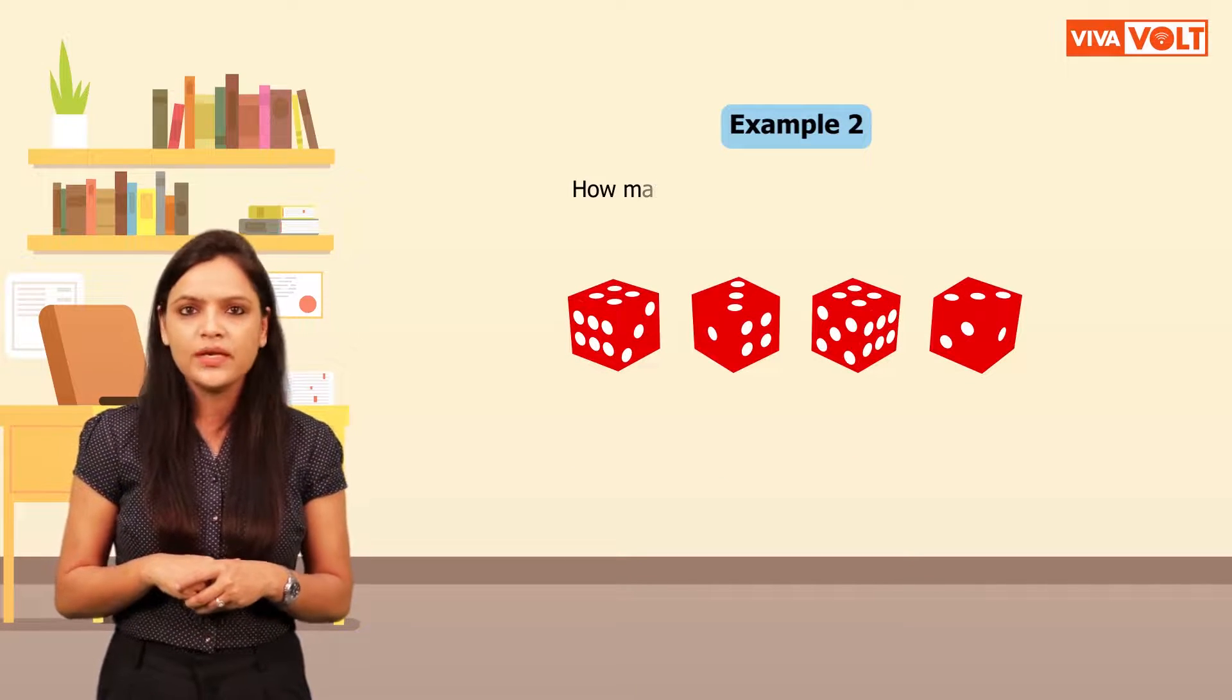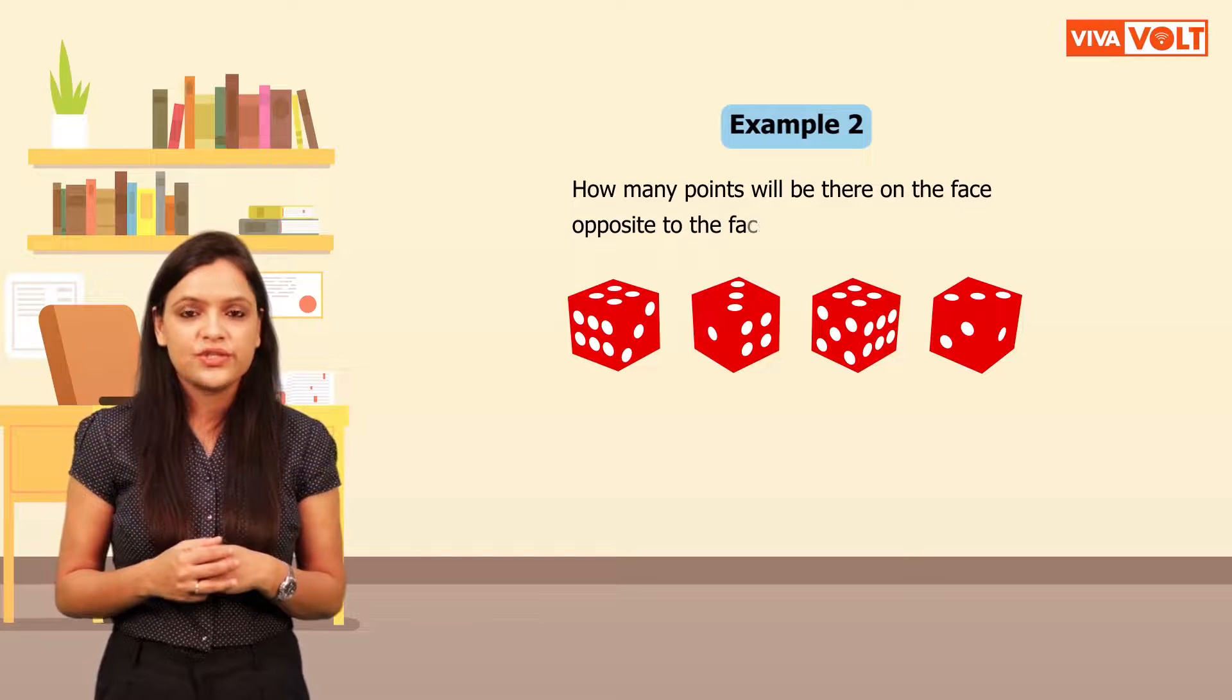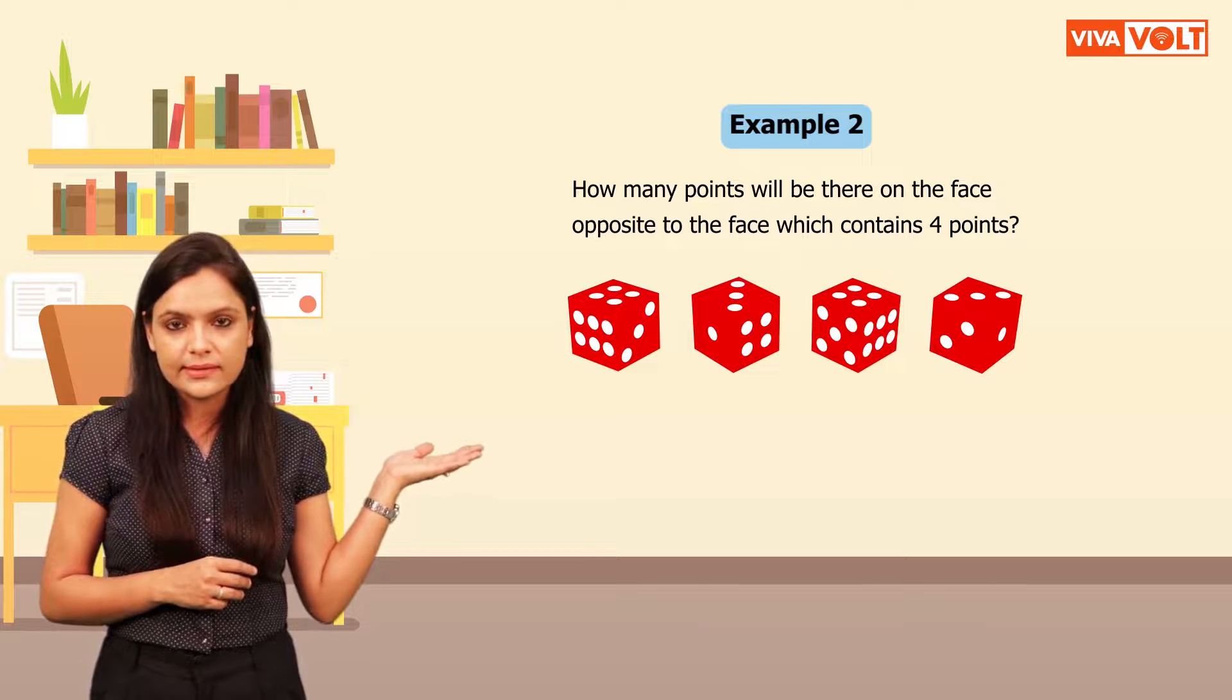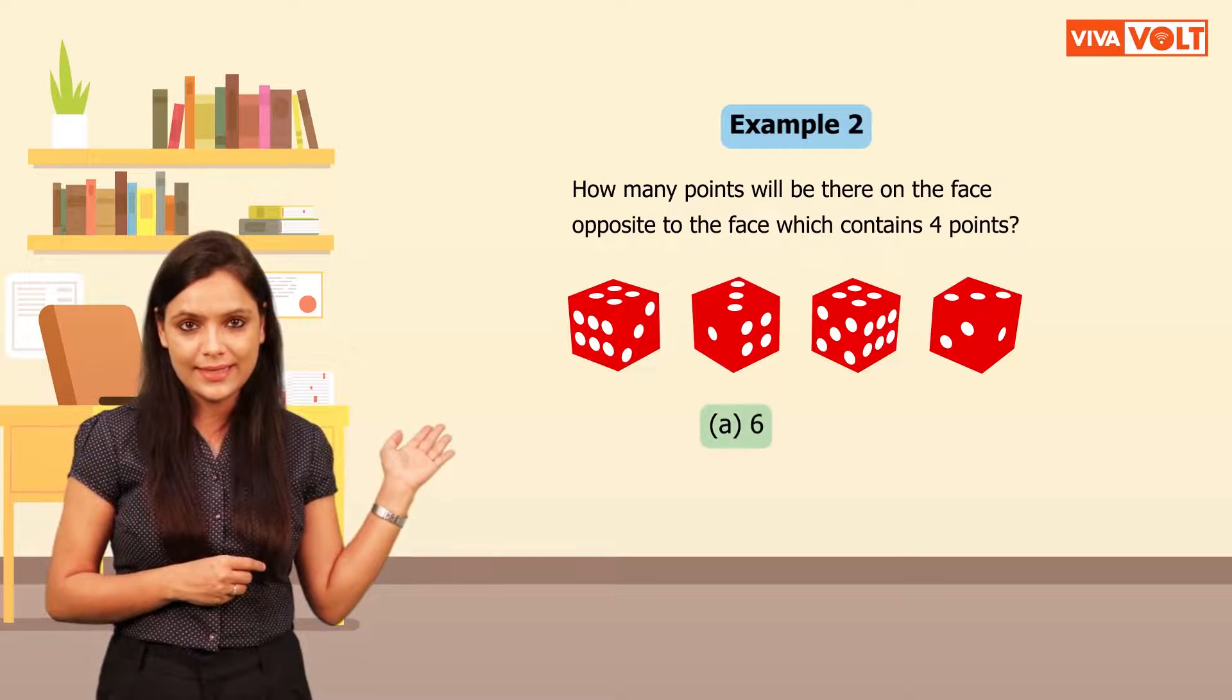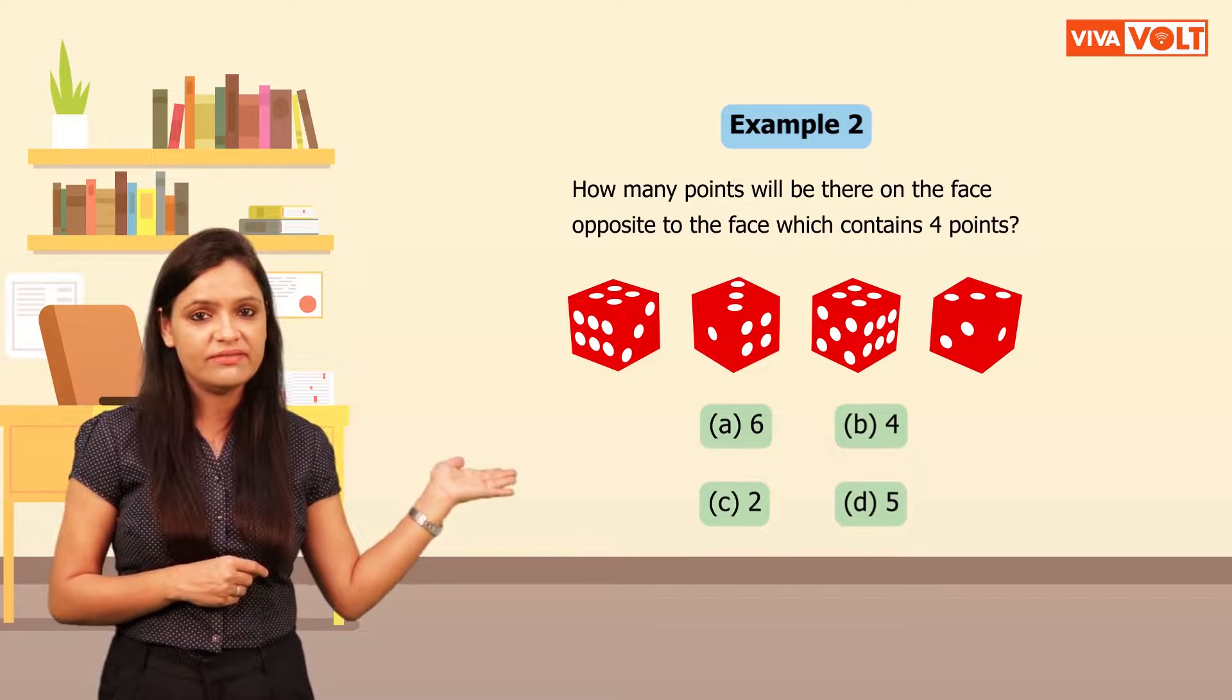Let's now look at an example based on dice. How many points will be there on the face opposite to the face which contains 4 points? Observe the figures. And the options are A 6, B 4, C 2, D 5.